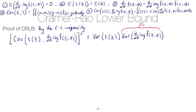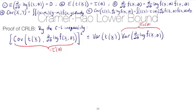Our notation for the Fisher information is I_N of theta. A direct application of the Cauchy-Schwarz inequality gives us the Cramer-Rao lower bound, as long as this covariance term equals the square of the derivative of tau of theta — whatever function of the parameter we're trying to estimate. What remains to be shown is that this covariance equals the derivative of tau of theta. We also need these variances to be nonzero and to actually converge — those are the regularity conditions stated in class.